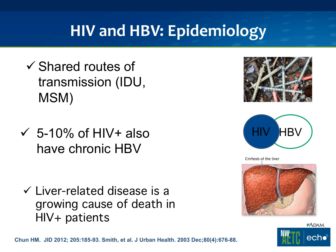Regarding hepatitis B and HIV: not surprisingly, because of shared routes of transmission — namely injection drug use or men who have sex with men — there's quite a bit of overlap. About 5 to 10 percent of HIV patients also have chronic hepatitis B; locally at Madison Clinic it's around 5 to 6 percent. In Sub-Saharan Africa or Southeast Asia it can be as high as 10 to 20 percent, partly because hepatitis B is more contagious. Liver-related disease is a growing cause of death in HIV-positive patients, and hepatitis B is a significant reason for that.